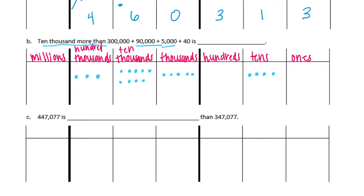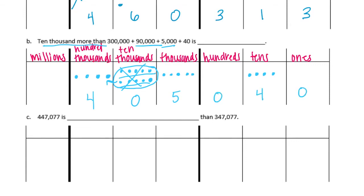So this is saying 10,000 more than this number. So what I'm going to do is add a 10,000. When I add a 10,000, that makes 10 ten-thousands, and 10 ten-thousands we can group into 100,000. So now these are gone because we turned it into 100,000, so we have 400,000, none in the 10,000s, 5 in the thousands, none in the hundreds, 4 in the tens, and none in the ones — we get 405,040.